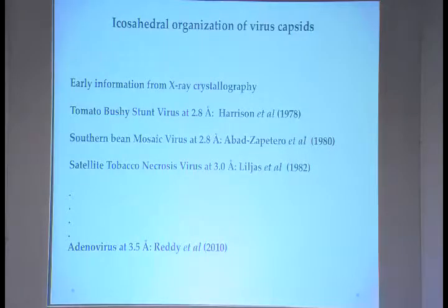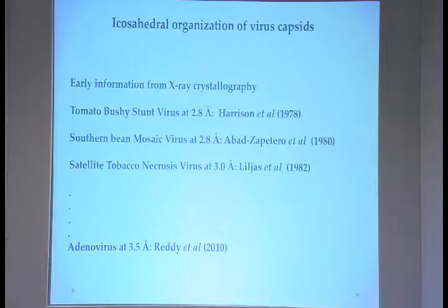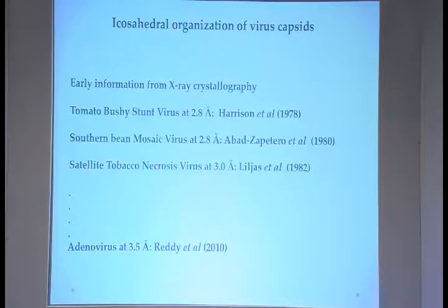Adenovirus, a fairly large virus, had its crystal structure published in 2010 at 3.5 Å. It started with viruses that were relatively easier to handle — smaller viruses with diameters within a limitation of about 28 to 32 nanometers. Adenovirus is a fairly large virus with a triangulation number of 25, and it was correspondingly difficult to solve.